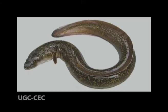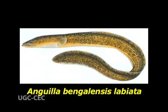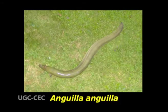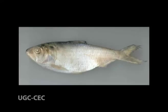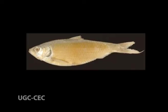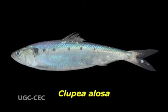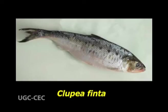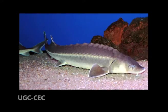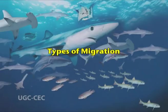The following are migratory fishes: first, eel — specifically known as Anguilla bengalensis bengalensis, Anguilla bicolor bicolor, Anguilla marmorata, Anguilla mossambica, Anguilla anguilla vulgaris, etc. Second is hilsa shad, known as Hilsa ilisha. Next is toli shad, also known as Hilsa toli. Next is twait shad, Clupea finta. Next is salmon, also known as Salmo salar and Oncorhynchus. Next is sturgeon, Acipenser.